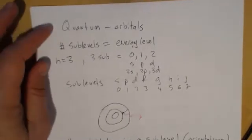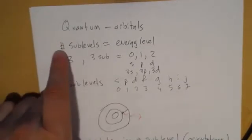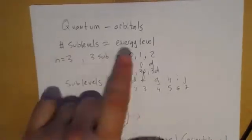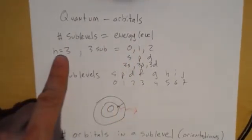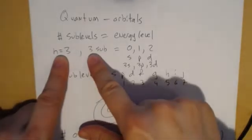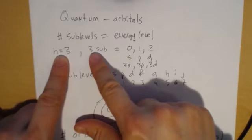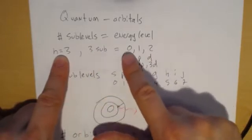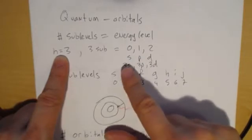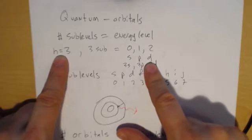A recap of the electron configuration worksheet. The number of sublevels is equal to the energy level. For instance, when n equals 3, we have three sublevels because it goes from n minus 1 down to 0. If n equals 3, we can have 2, 1, and 0, which represent s, p, and d. Specifically, we'd be talking about the 3s, the 3p, and the 3d.